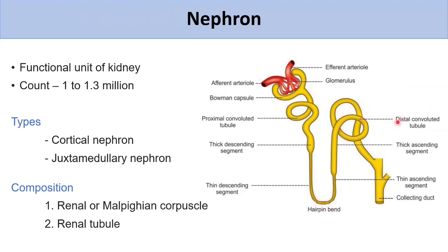Then the distal convoluted tubule connects to the collecting duct. When fluid reaches the collecting duct, it is called urine. Before that, while in the tubule, it is called glomerular filtrate. The glomerular filtrate is processed and ultimately becomes urine.